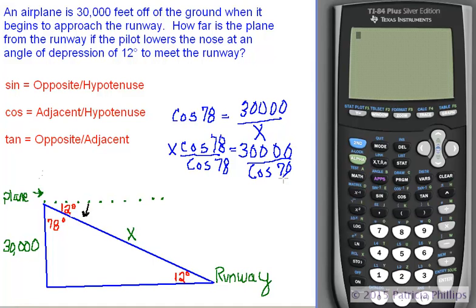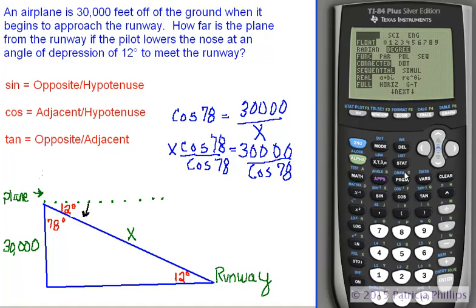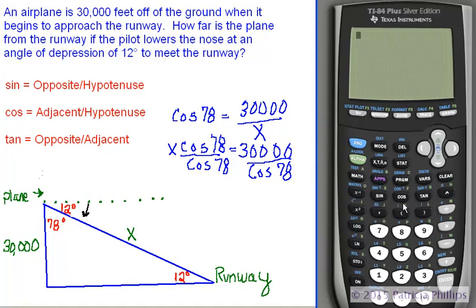So, I want you to turn on your calculator so that we can figure out what the answer is for 30,000 divided by the cosine of 78. Click mode and make sure you're in degree mode. Second and quit to get out of that menu.